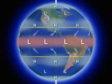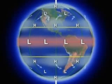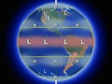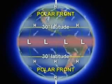Surface winds spiral out from the subtropical highs, moving toward the equator as well as the mid-latitudes. Above 30 degrees latitude, wind patterns are more complex in a belt of conflict between polar and subtropical air known as the polar front.